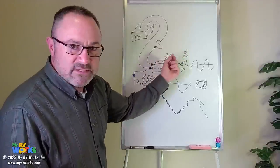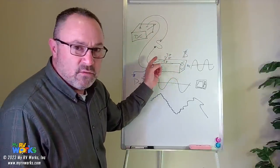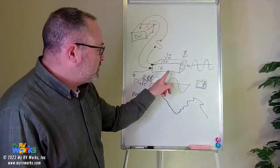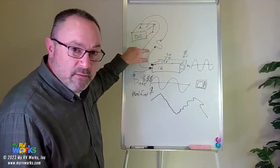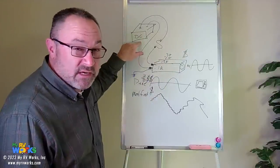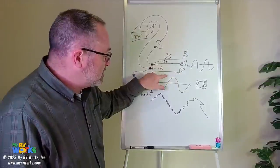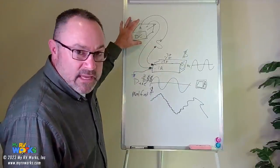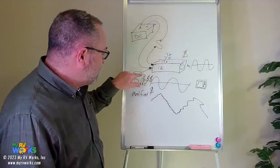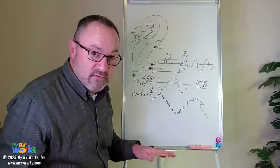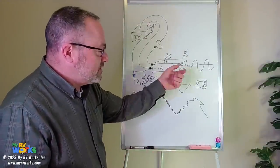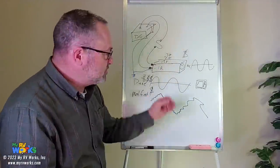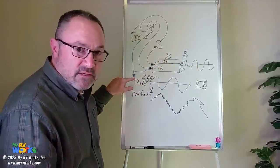Inverters don't like to get hot — they lose efficiency in heat, so keep them somewhere with airflow. Also, the gauge of wire feeding the inverter is critical. If you starve it from power, it works really hard and hurts your battery. Read your manual for recommended wire gauge, fuse size, and battery bank size. Make sure the inverter is grounded and that your battery negative is grounded to the same point — a common frame of reference. An electrical tester plugged into the inverter outlet may say 'open ground' since it generates its own ground.